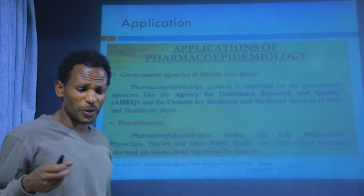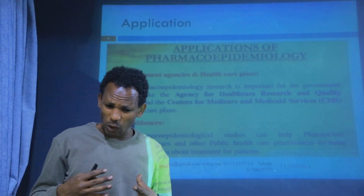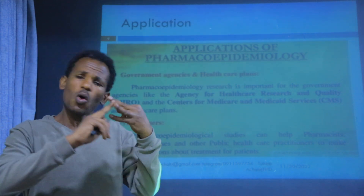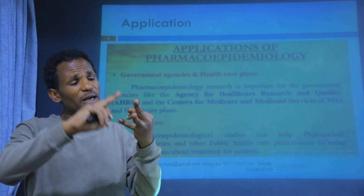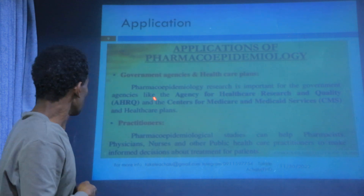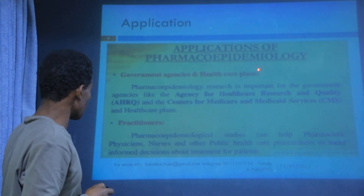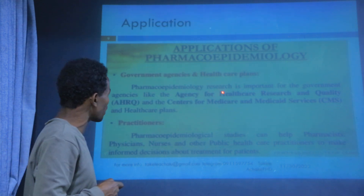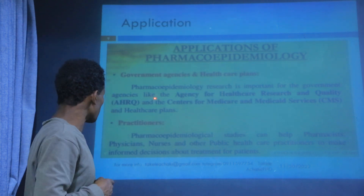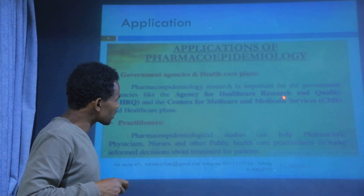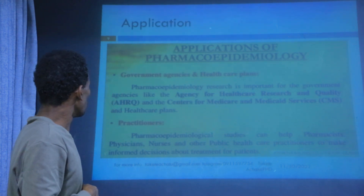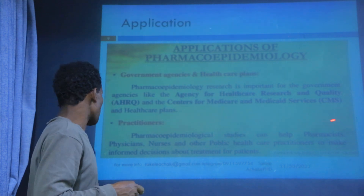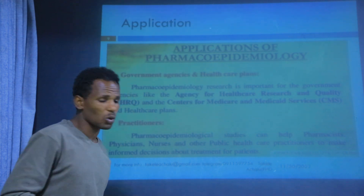The applications of pharmacoepidemiology can be categorized into two or three parts: governance, healthcare, and practitioners. In governance and agency, pharmacoepidemiology research is important for government agencies, such as agencies for health research and quality. For practitioners, pharmacoepidemiological studies can help pharmacists, physicians, nurses, and others.